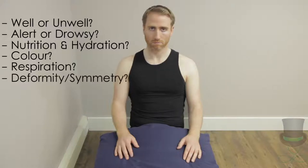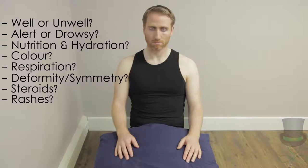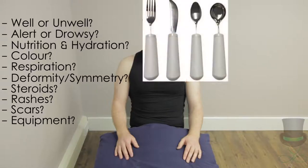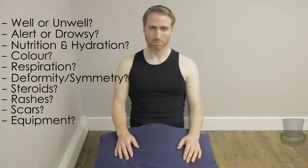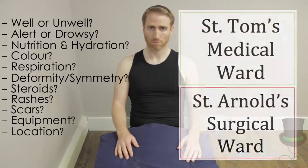Remember the general observations that apply to any system, and apply these specifically to the rheumatology exam. Is the patient well or unwell? Are they alert and awake or drowsy? Comment on whether the patient is overweight, cachectic, fluid overloaded or dehydrated. Comment on the patient's colour. Is the patient breathing comfortably or are they dyspneic? Note any obvious deformity in any of the patient's joints. Note any signs of steroid use. Note any rashes and describe briefly — a more detailed description can be given on closer inspection. Note any scars, especially around the joints. Look for equipment or devices attached to or surrounding the patient. Comment on any modified equipment such as cutlery or crockery, grippers or modified telephones. Note any mobility aids, and note the location of the patient — for example, they may be on a general ward or a high dependency unit. Note any signs around the bed.